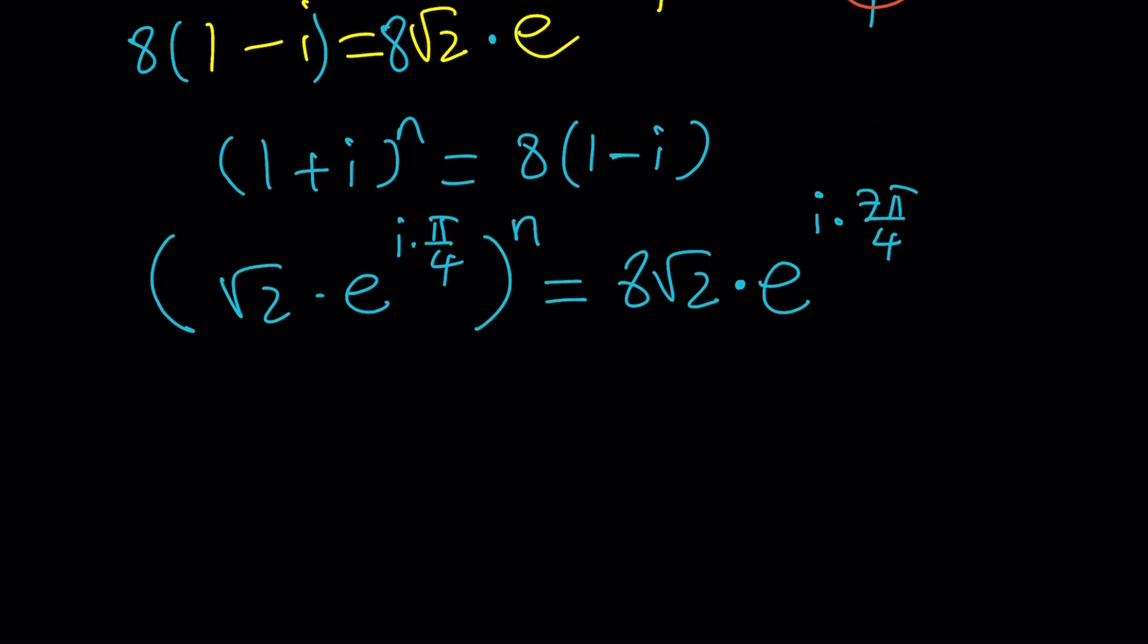So let's go ahead and simplify this, shall we? First of all, you raise √2 to the power n, and then you do e^(iπn/4). You can do it because n is an integer.